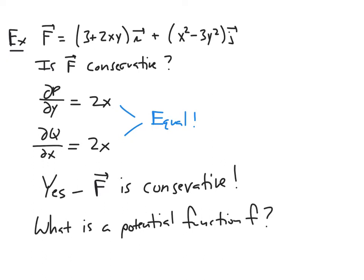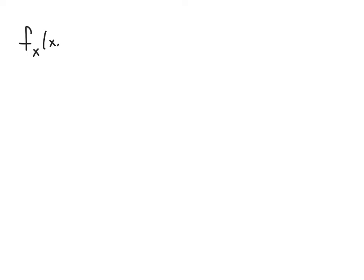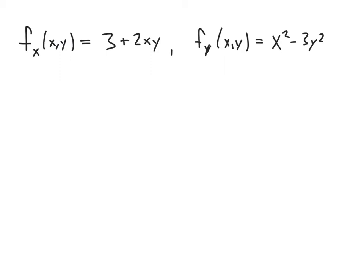This means we know this vector field is the gradient vector for some potential function f. That leads naturally to the question: what is a potential function for this conservative vector field and how can we find it? We know that if I take the potential function f and take its derivative with respect to x, I get the first component 3 + 2xy. And the partial with respect to y must equal the second component x² - 3y². We need a function f which has both of these partial derivatives.